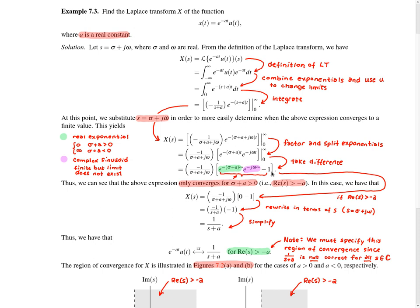The key thing to pay attention to are the two exponentials highlighted in green and in purple. The first term in square brackets will only converge if σ + a > 0. In that case, the green exponential equals zero and the first term drops out. If σ + a is not greater than zero, then this first term fails to converge, for example by blowing up to infinity.